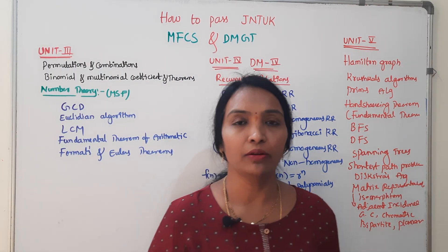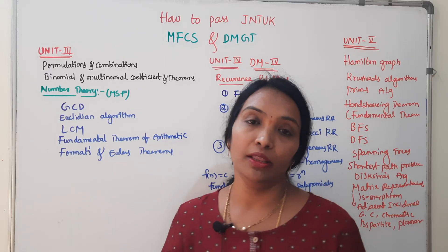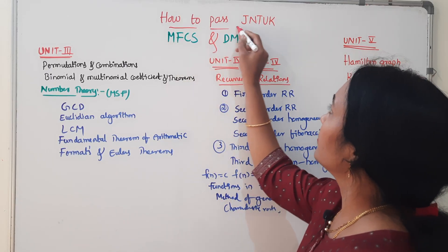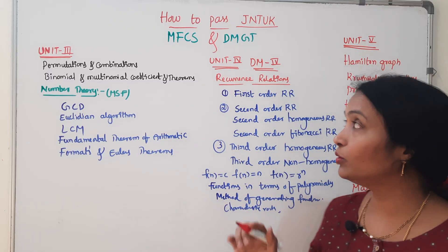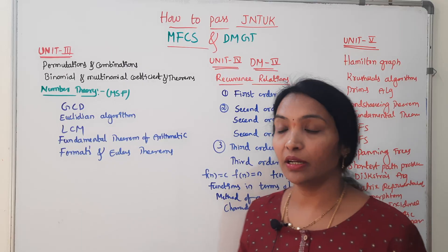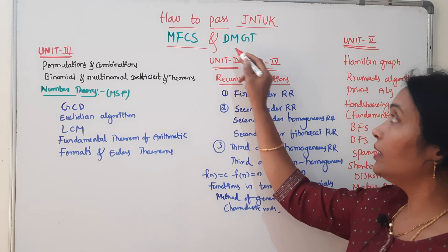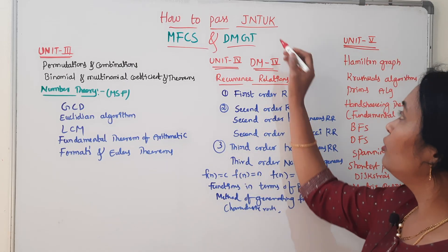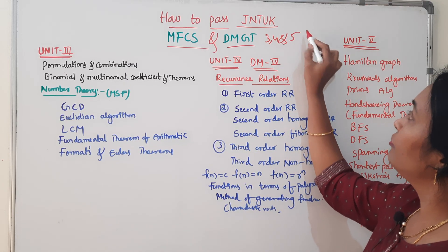Hi all of you, welcome back to Ramah Reddy Maths Academy. This is JNTUK — how to pass. In this video, MFCS, called Mathematical Foundation and Computer Science, and DMZ, Discrete Mathematics and Graph Theory. This video will be important to know the 3rd, 4th and 5th units.